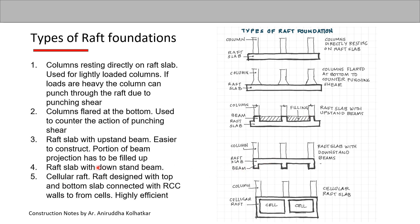The fourth type is a raft slab with downstand beams, where the beams face downwards. This is a little difficult to construct because it is difficult to remove the formwork once the raft slab is cast, but it can be done on hard soil.